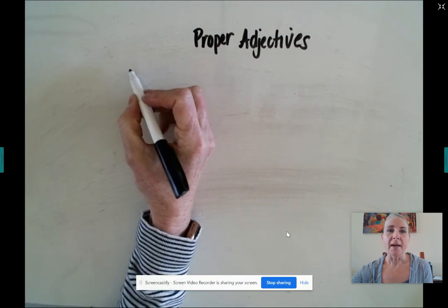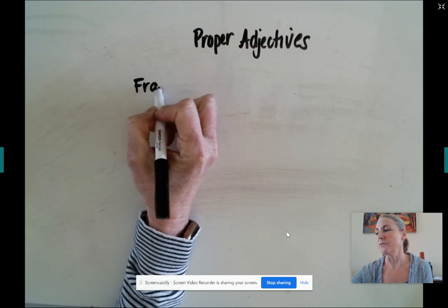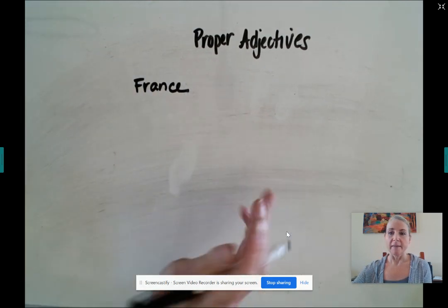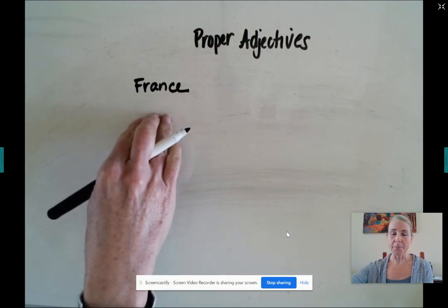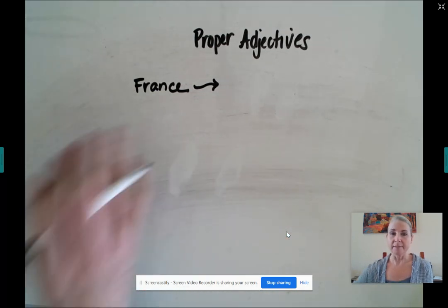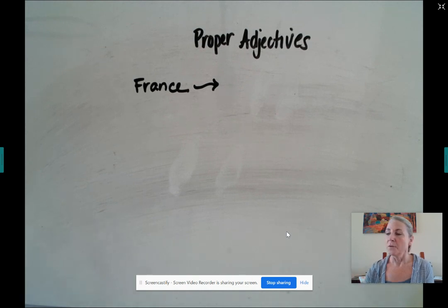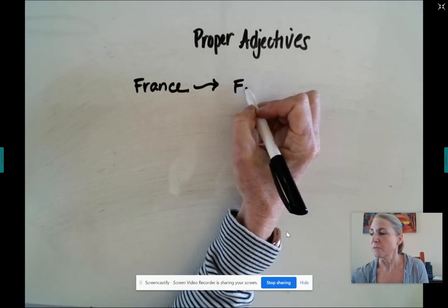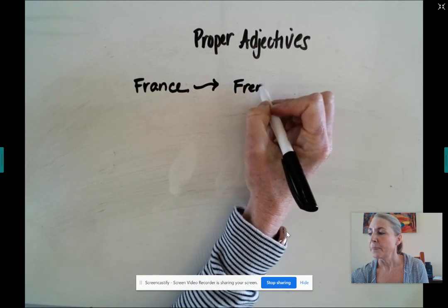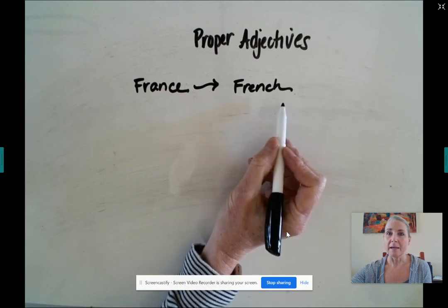If I have the term France, France is a country. That's its name — it's a proper noun. But if I want to describe something from France, so let's say the language that people speak in France, we don't say they speak France. We say they speak French. That is the language spoken in France. This is a proper adjective.